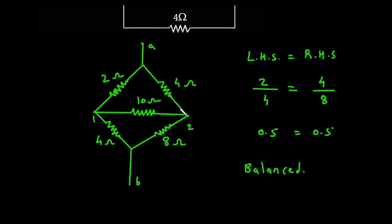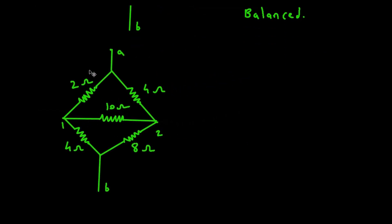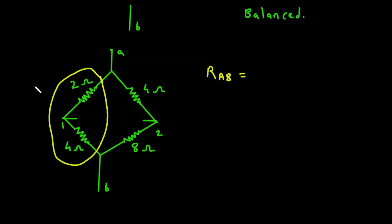When the bridge is balanced, we can ignore this 10 Ohm resistance, because there will be no current flow through the 10 Ohm resistor when the bridge is balanced. Now we can easily find the value for RAB. We can see this 2 Ohm and 4 Ohm are connected in series, so it will be 6 Ohm. And this 4 Ohm and 8 Ohm are connected in series, so it will be 12 Ohm.